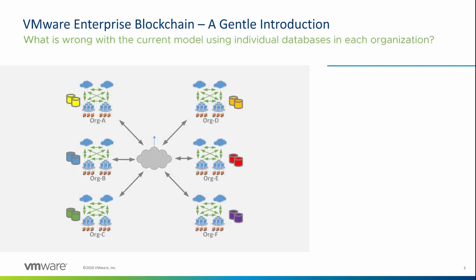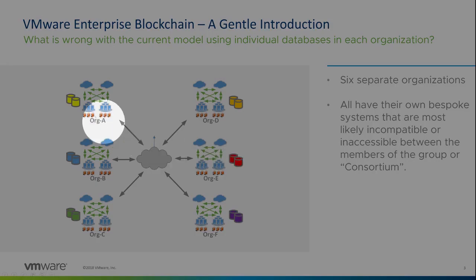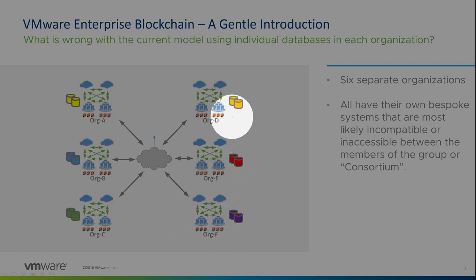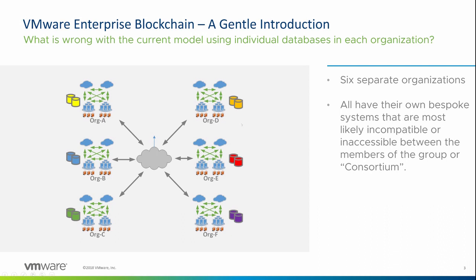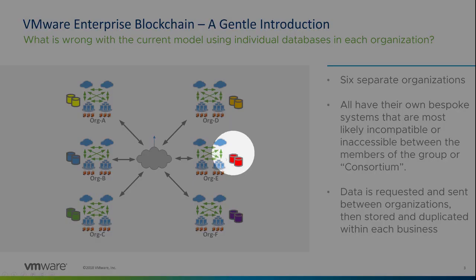So, what's wrong with the current model of using individual databases in each organisation? In the diagram you can see, we have six separate organisations, and all of them have their own bespoke systems and their own separate databases, which are most likely inaccessible and incompatible between other members of the consortium.